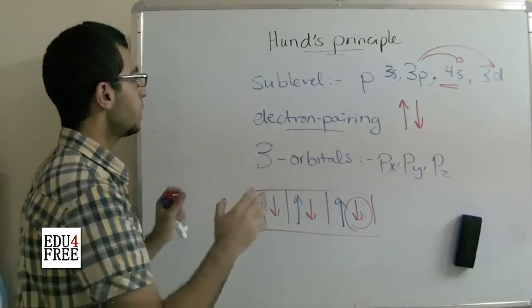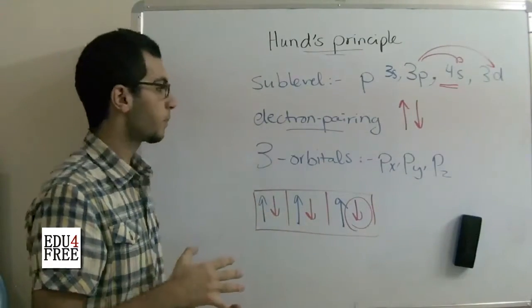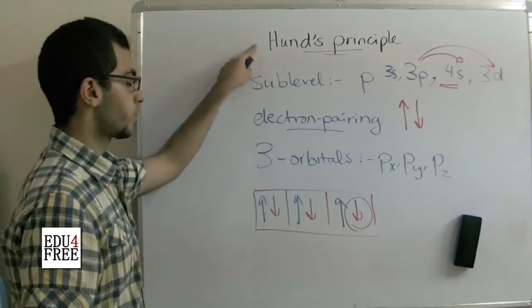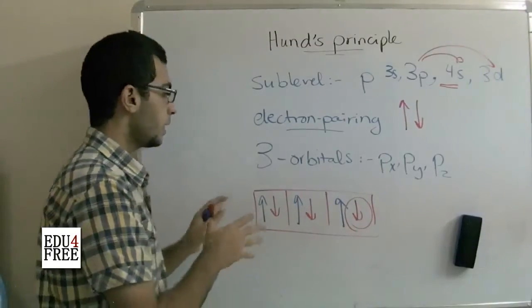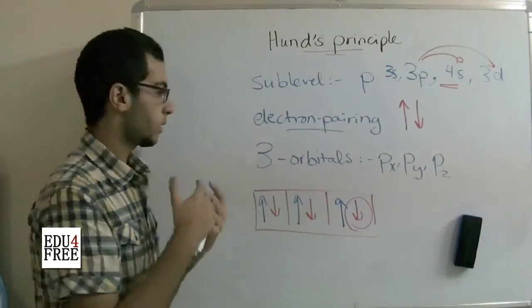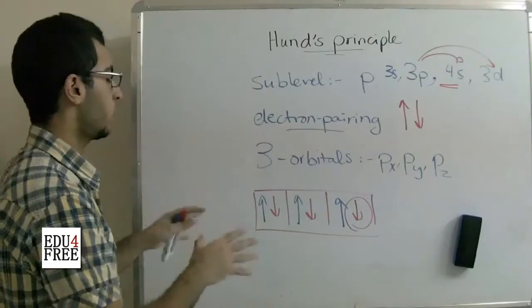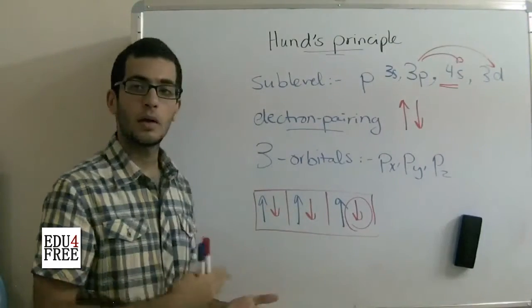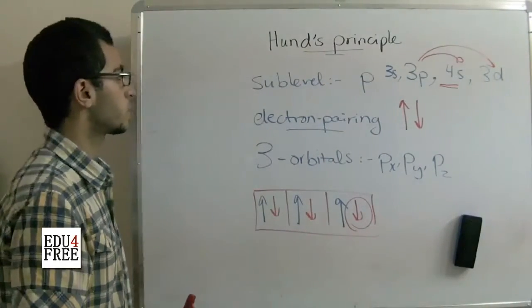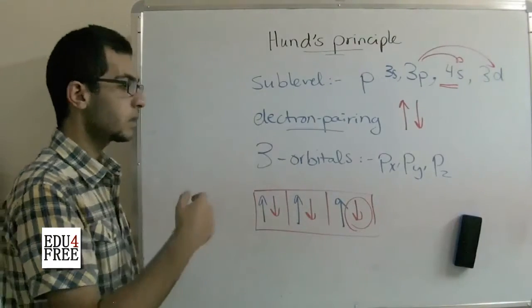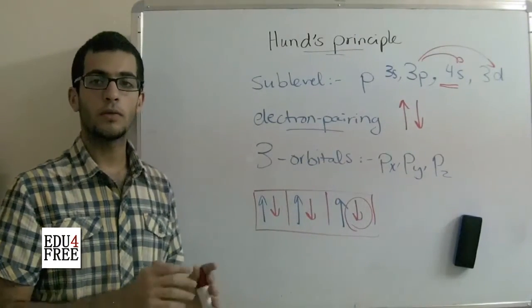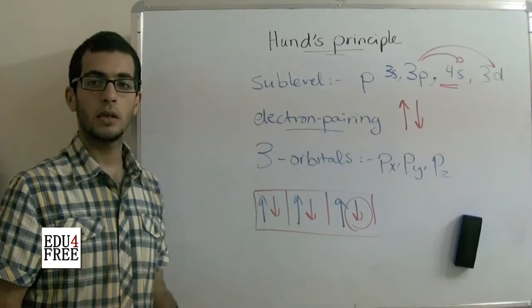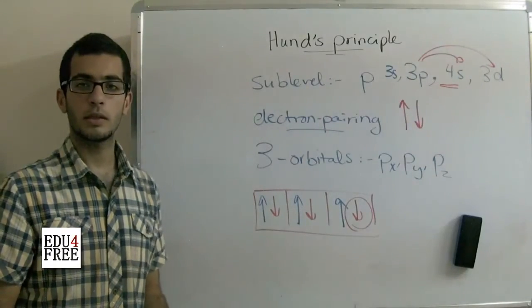So now we know the Aufbau building-up principle and we know Hund's principle. Now we are capable of writing the electronic configuration. We now know how the electrons are arranged in the orbitals of the sub-levels. Next time we will learn some methods of writing the electronic configuration. Until then, I thank you for watching and see you.